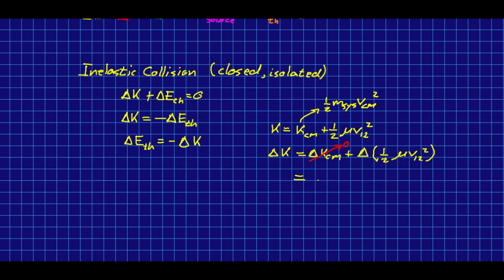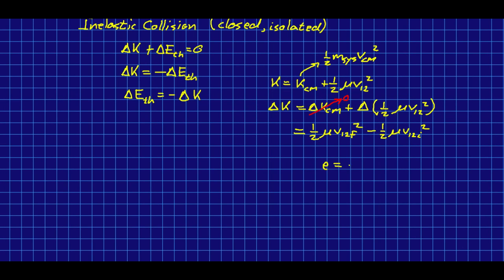So that is going to be a final minus an initial as usual. So a half the reduced mass, the final relative speed squared, minus a half the reduced mass times the initial relative speed squared. And so notice that the coefficient of restitution is just v12f over v12i, or in other words, v12f is just e times v12i. So I'm going to plug that in here and plug all of that up into the delta e thermal. So our delta e thermal now is negative delta k. So that's going to be, and now I'm going to replace v12f.